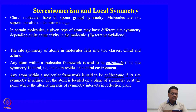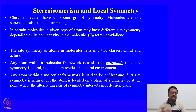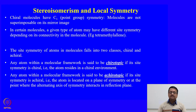What we know about chiral molecules is that they have C1 point group symmetry — molecules are not superimposable on their mirror image, just like the right hand and left hand cannot be superimposed. In certain molecules, a given type of atom may have different site symmetry depending on its connectivity in the molecule.